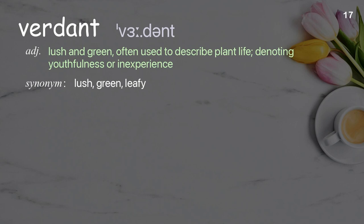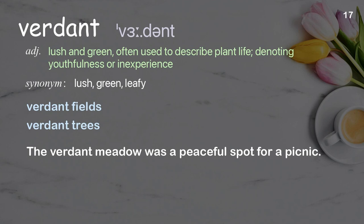Verdant: lush and green, often used to describe plant life, denoting youthfulness or inexperience. Examples: verdant fields; verdant trees. The verdant meadow was a peaceful spot for a picnic.